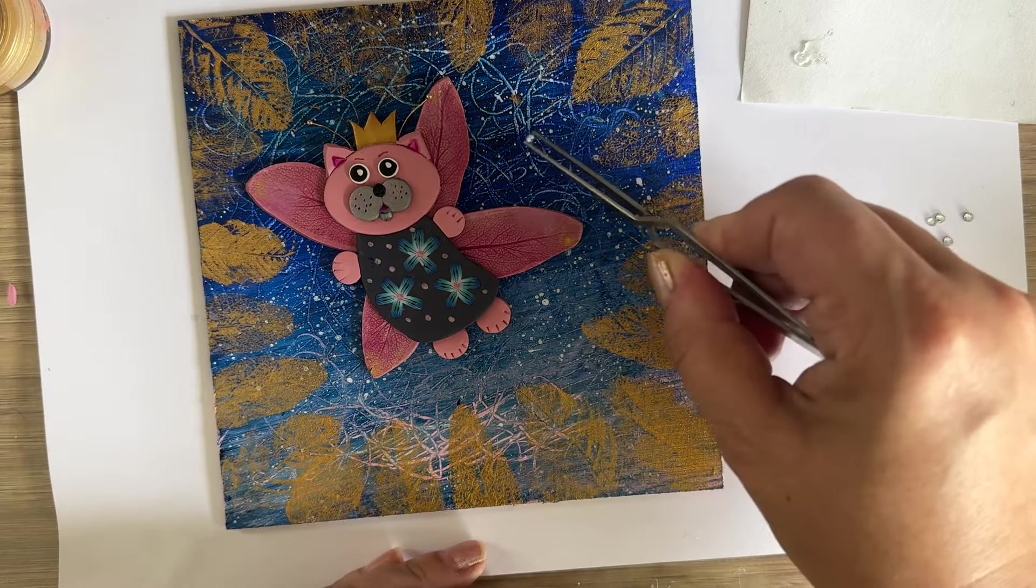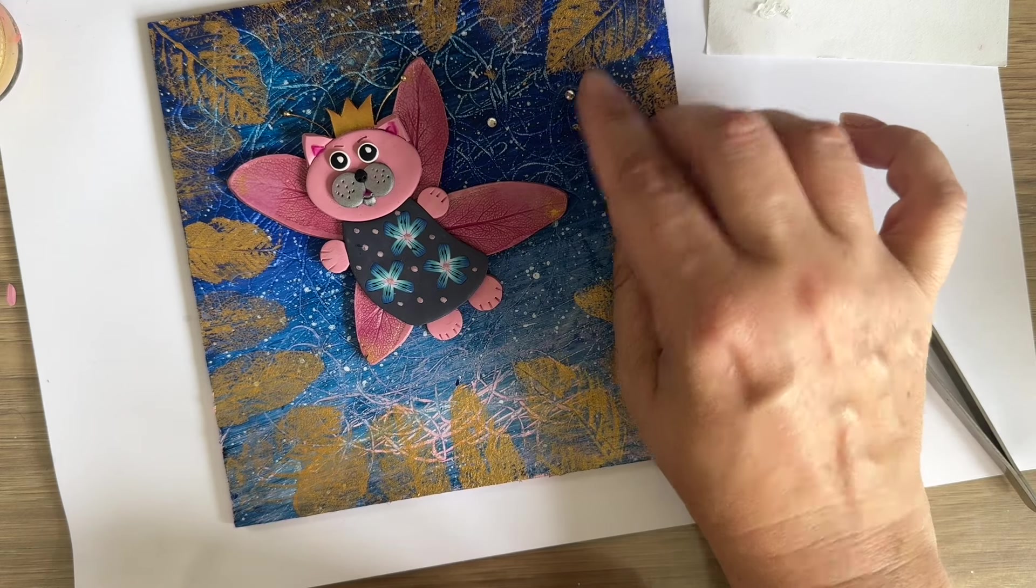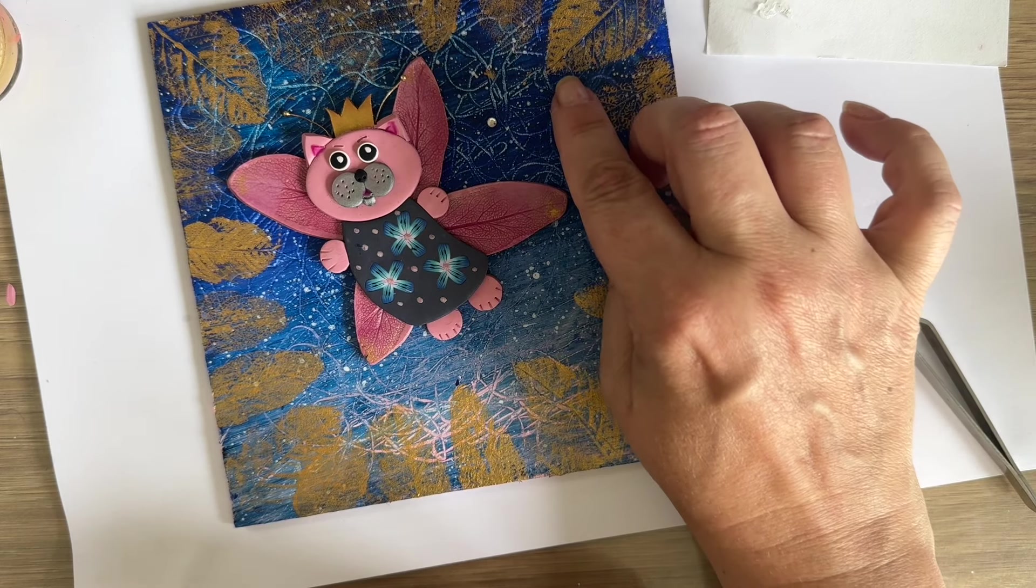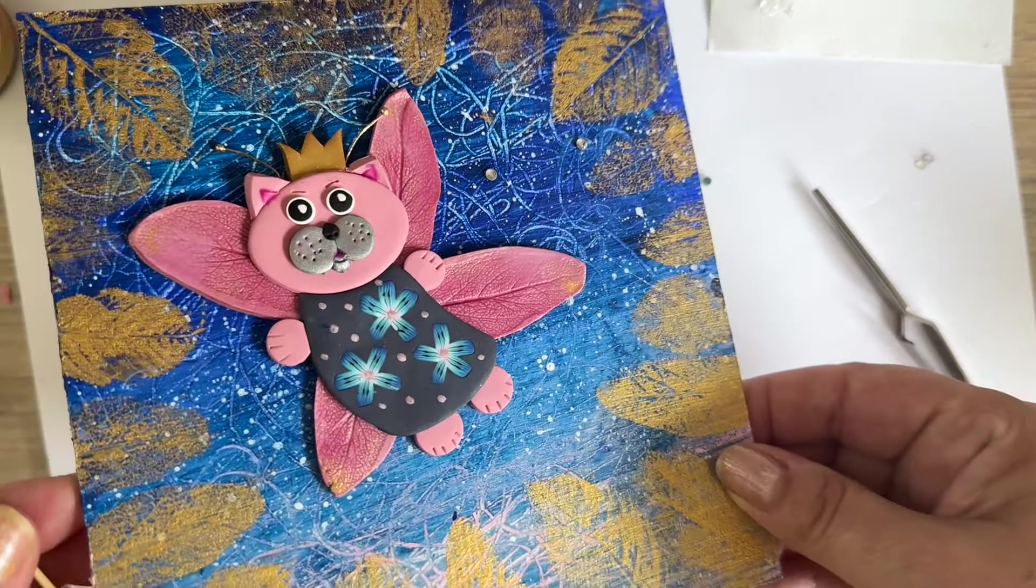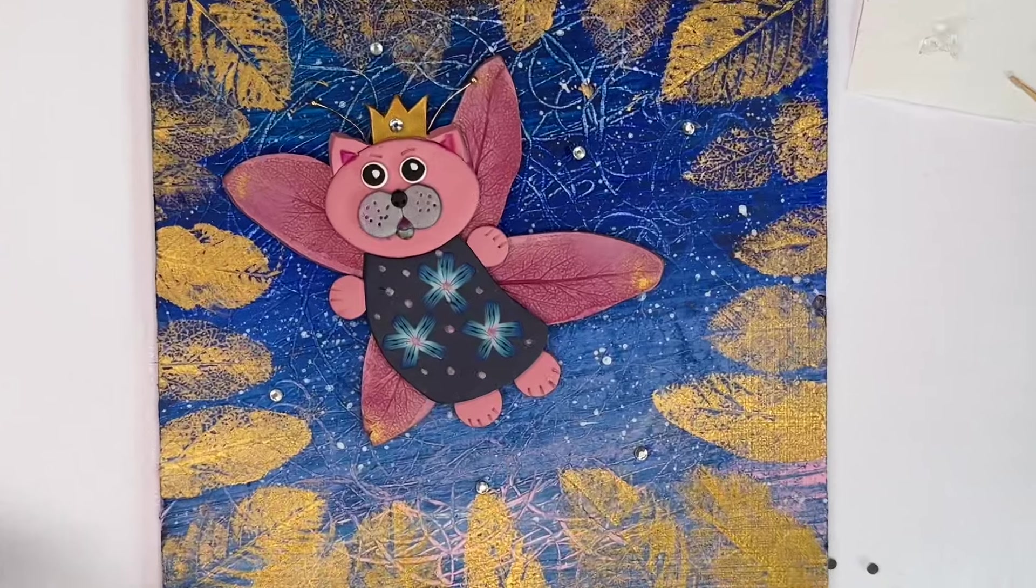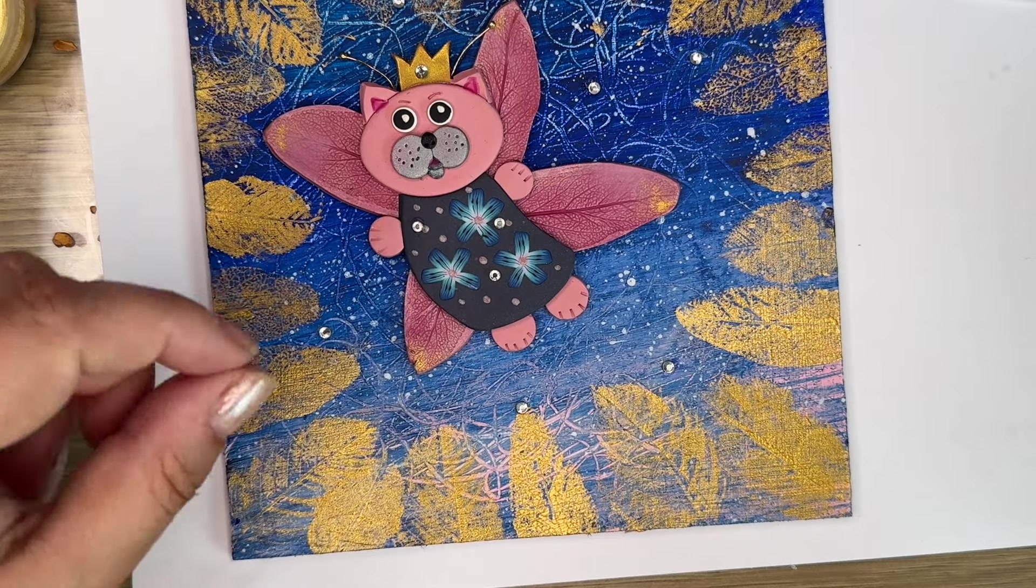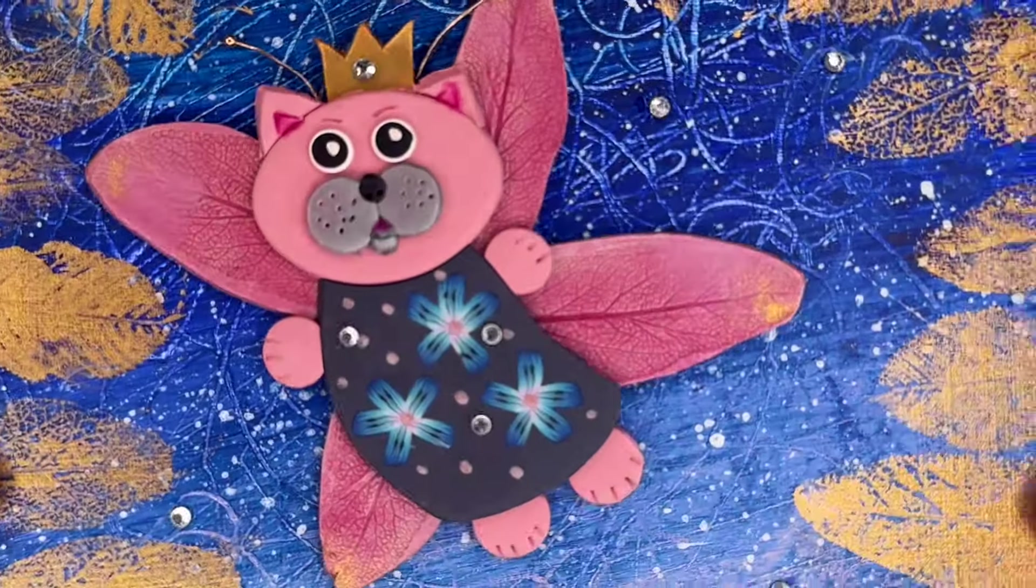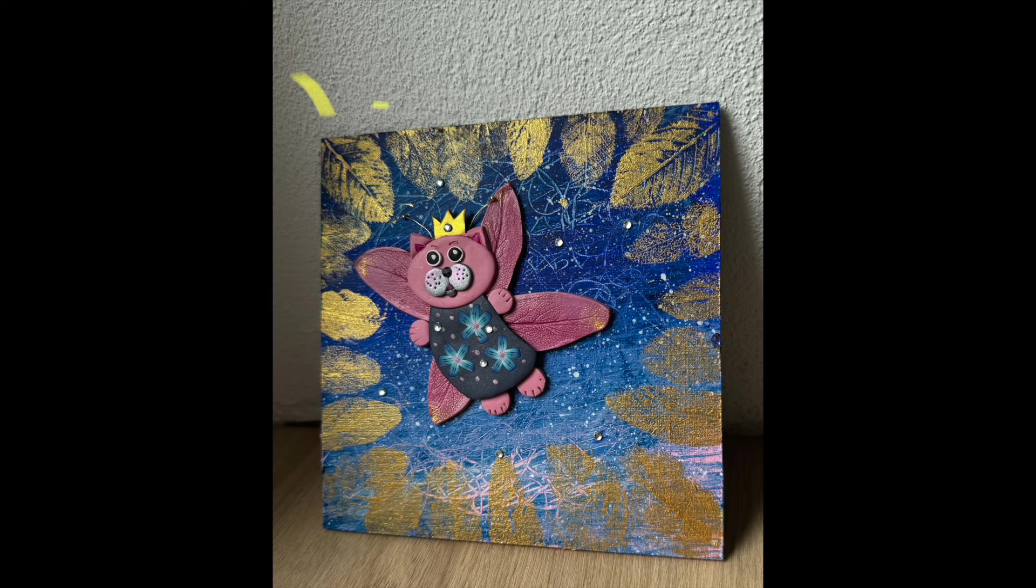So use super glue at this moment because it's, I think, impossible to glue them by heat gun. And if you have some rhinestone holder, it's better than with pliers. So glue them step by step. You can see they are a little bit sparkling. I put one on the crown and some also on the body of the kitty, and it's done.